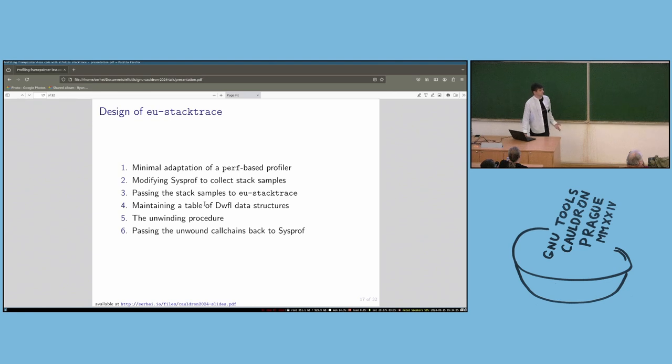So to see if this works, I built a prototype for an unwinding tool for elf utils, where the idea is I would take an existing perf-based profiler, try to make a minimal patch to it, keep it as simple as possible. So for that, I picked sysprof since that was in the Fedora discussions. People using sysprof were a major driver of the discussions. So modify that to collect stack samples, pass them to a new office tools tool called use stack trace, unwind them, and then pass them back to sysprof as if the data had been obtained from approach for call chain.